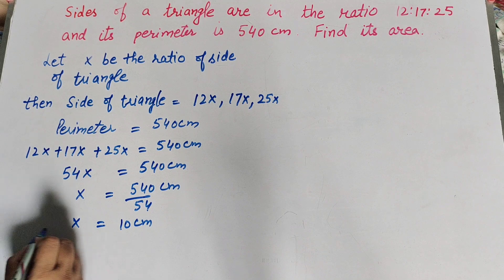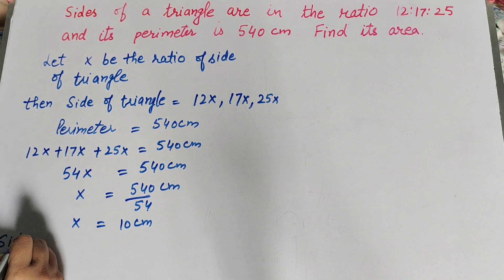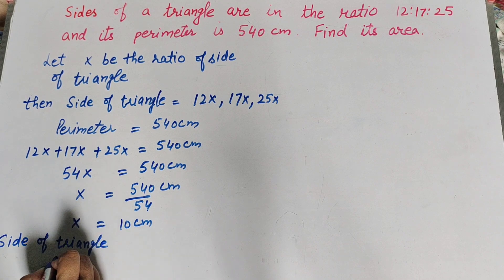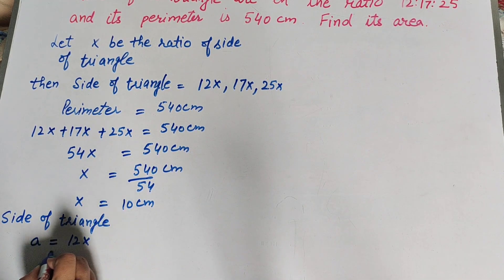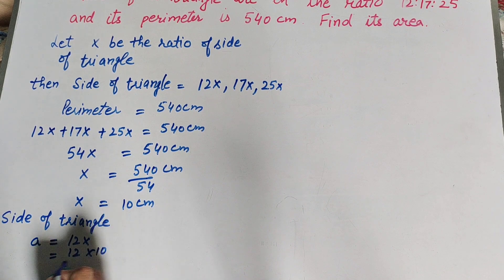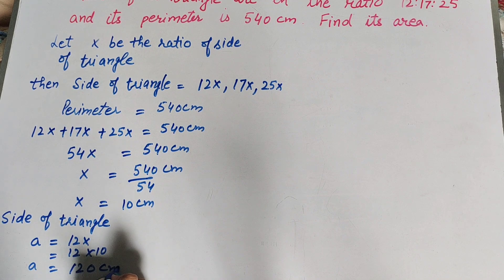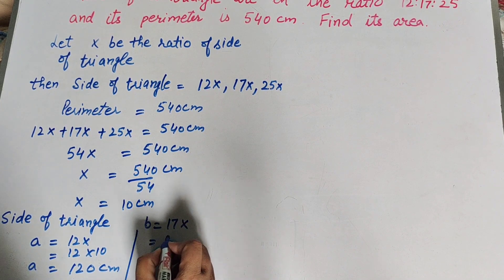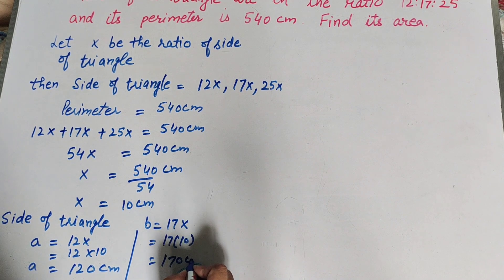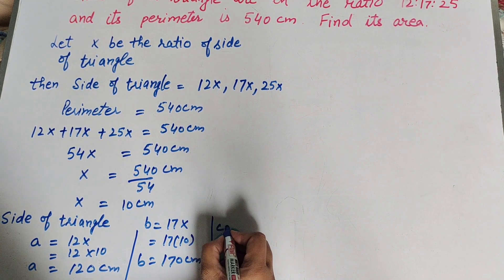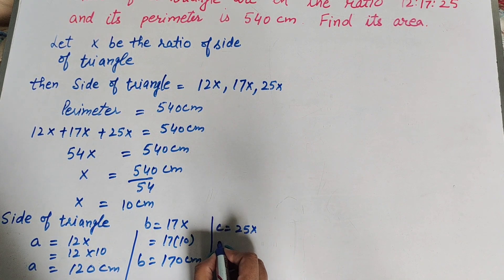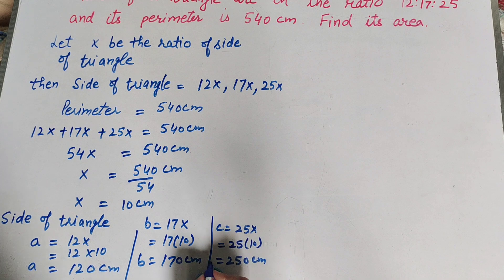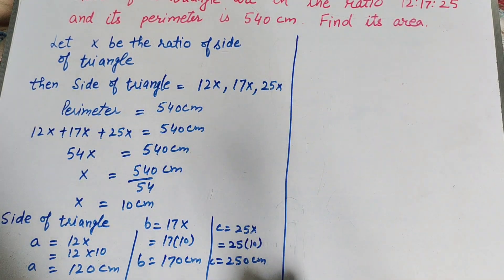So X equals 10 centimeters. Now we find the sides of the triangle. Side A equals 12X, which is 12 into 10, so A equals 120 centimeters. Side B is another side of the triangle, which is 17X, so B equals 170 centimeters. Side C is the third side, which is 25X, so C equals 25 into 10, which equals 250 centimeters.